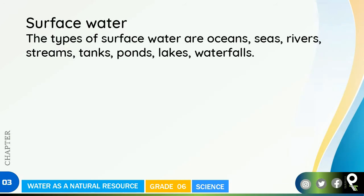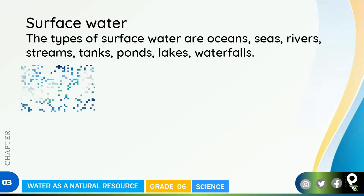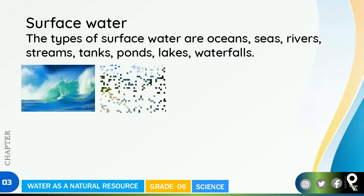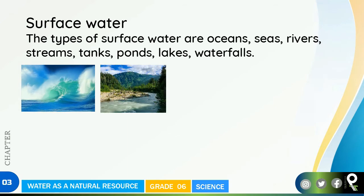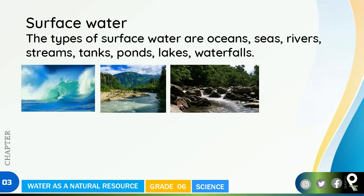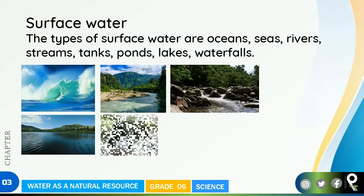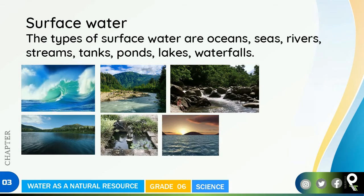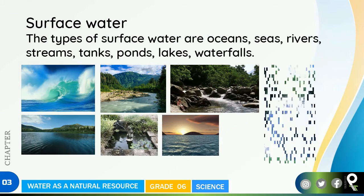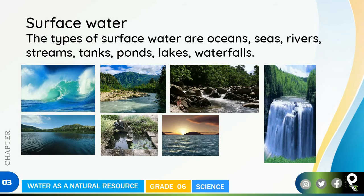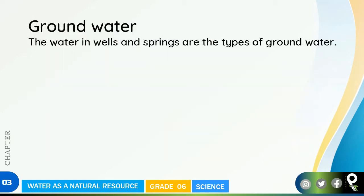Now let's understand surface water. The types of surface waters are: oceans and seas, rivers, streams like small streams, tanks, ponds, and lakes - we already know about those - and waterfalls.